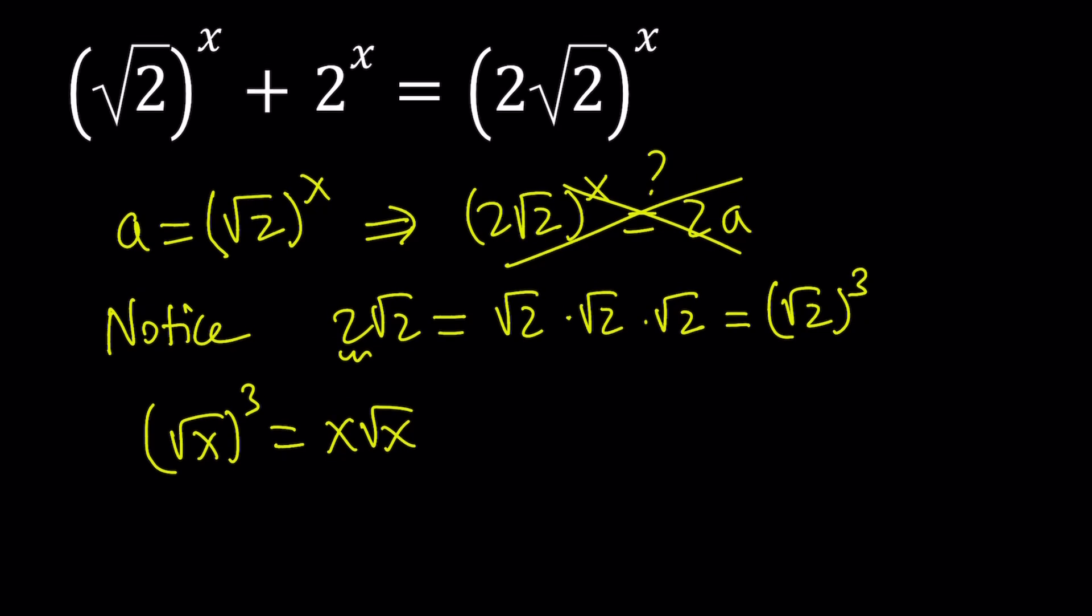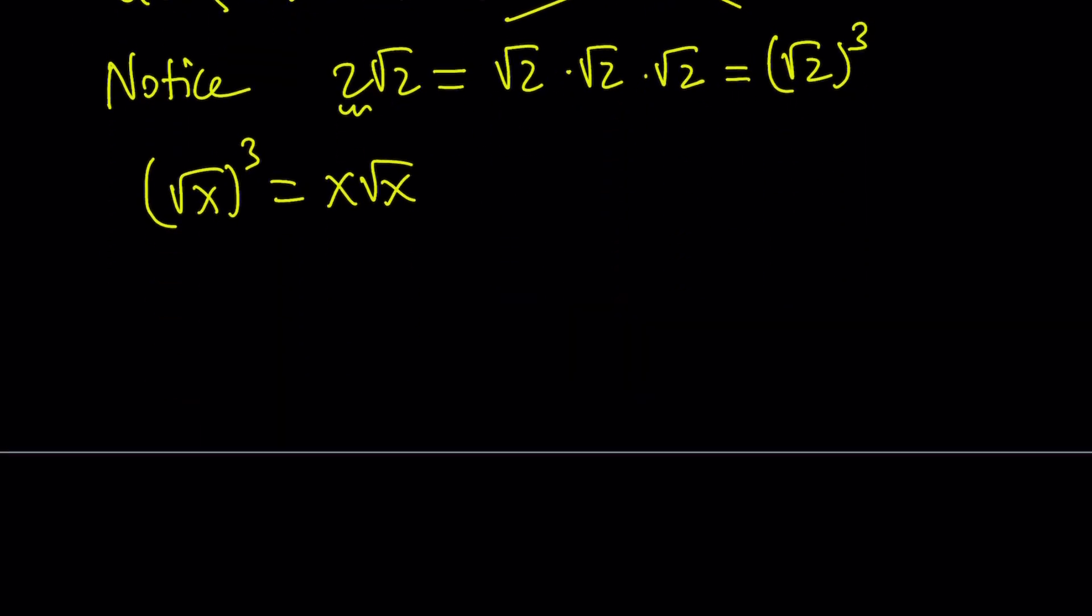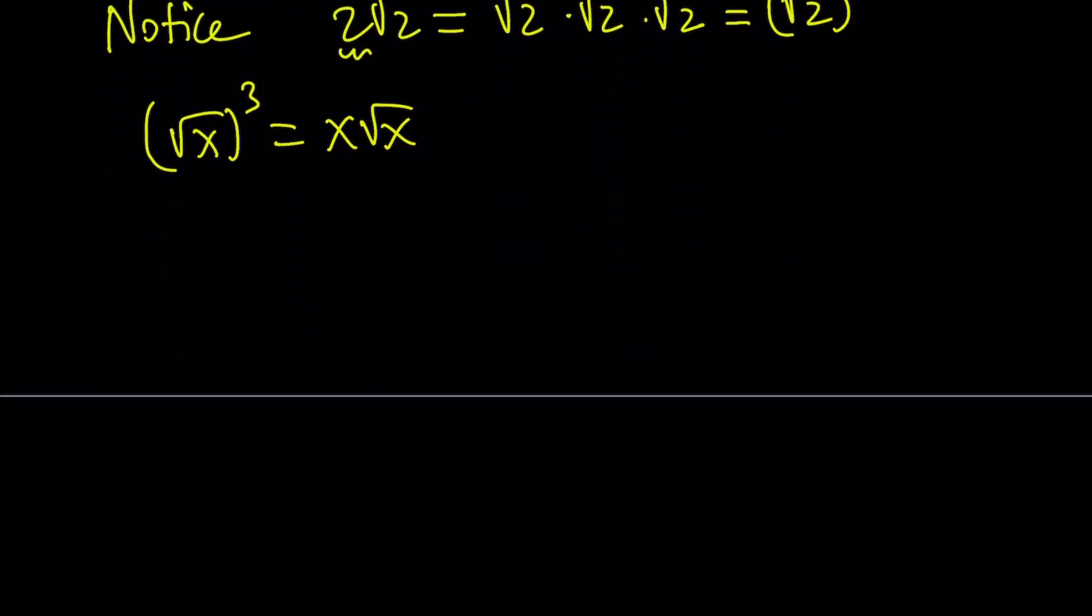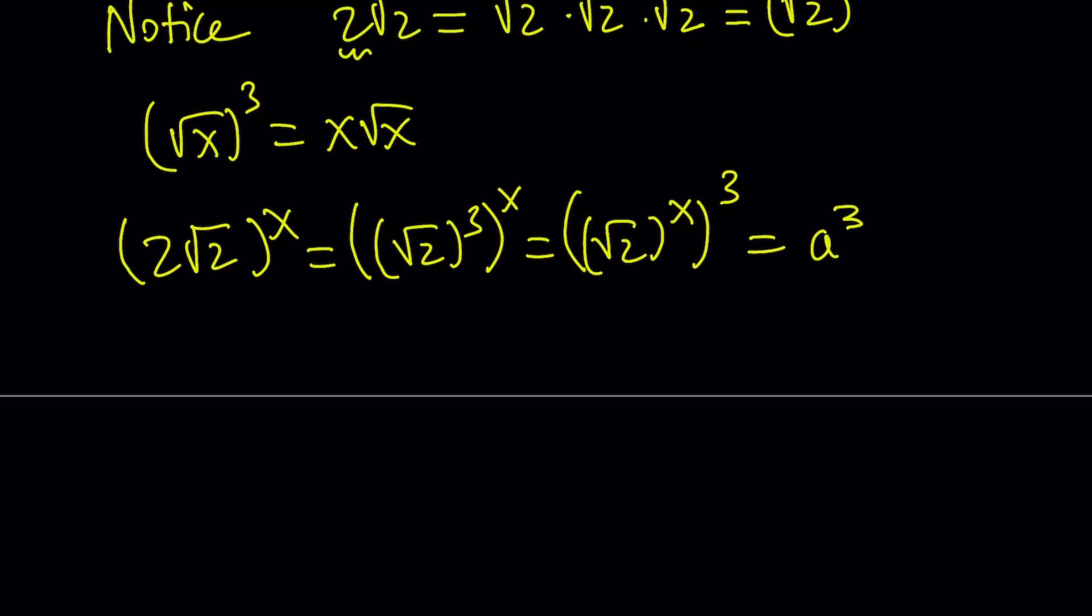Now, let's go ahead and substitute everything into the original equation. But first of all, let's simplify this a little bit. 2 times the square root of 2 to the power x can be written as square root of 2 to the third to the power x. And then the 3 and the x can be switched around. And we can write this as square root of 2 to the x to the power 3. And since square root of 2 to the power x is a, this becomes a cubed.